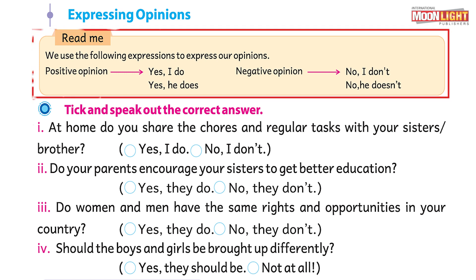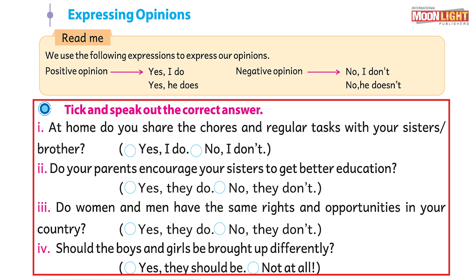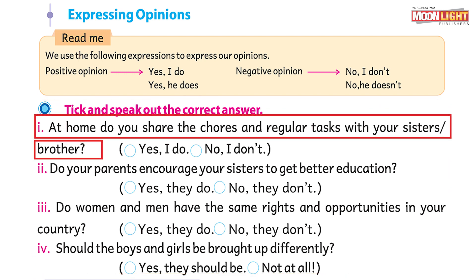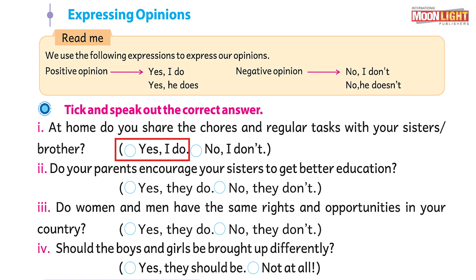We have been given some MCQs and we are going to choose which expression of opinion is correct. First: at home, do you share the chores and tasks with your brother and sister? The options are yes I do and no I don't. Obviously either answer could apply — maybe you do, maybe you don't.